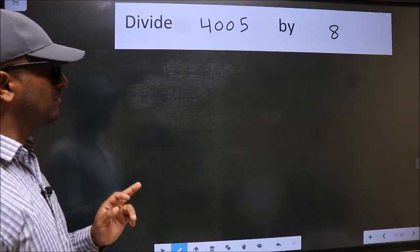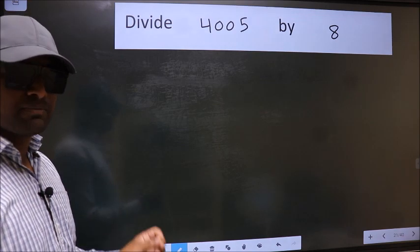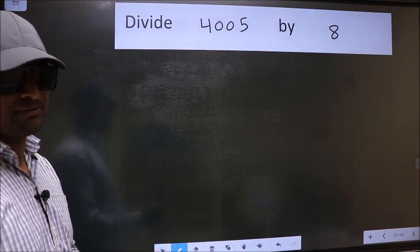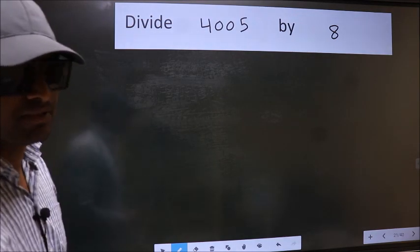Divide 4005 by 8. While doing this division, many do this mistake. What is the mistake that they do? I will let you know. But before that, we should frame it in this way.